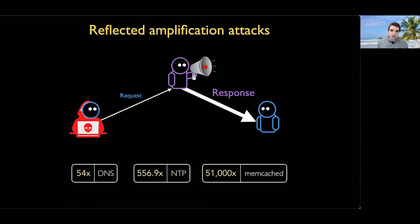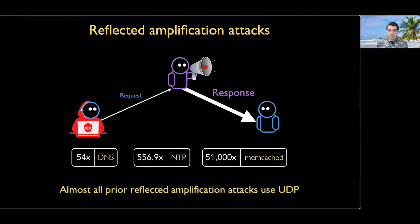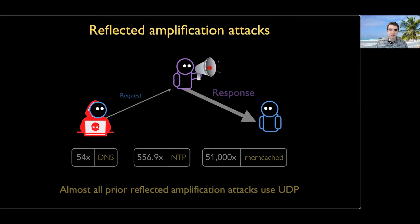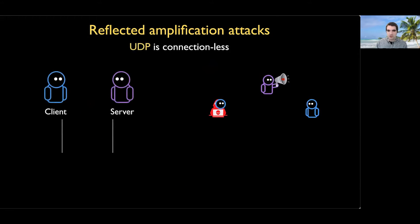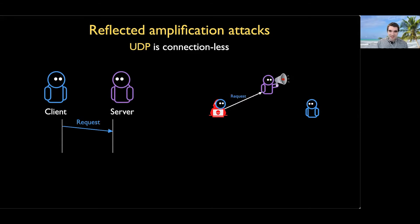Almost all of these attacks have historically been limited to UDP, and the reason is that UDP is a connectionless protocol. There's no setup needed before a client and server can start communicating, so it's amenable to the idea of pretending to be your victim, making a request, and then just letting that server send a large response to your victim.